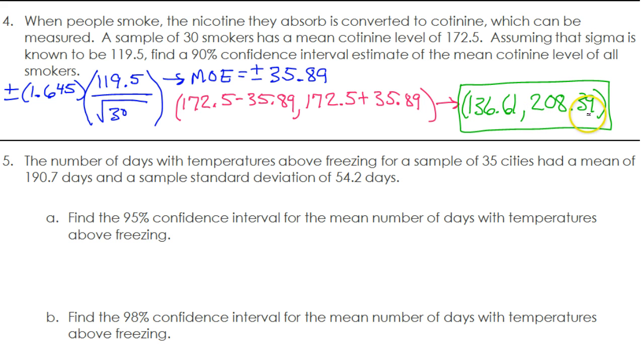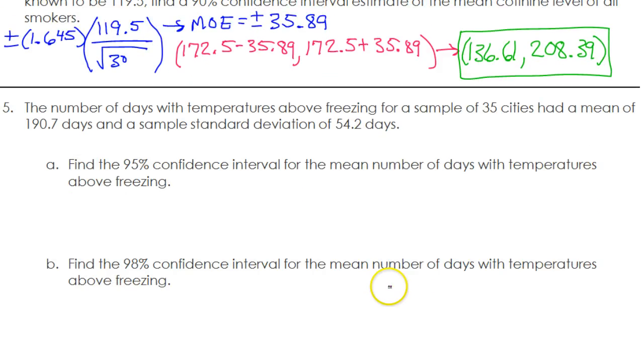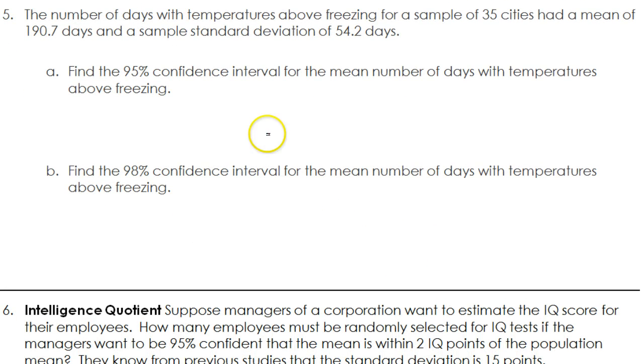So here is our 90% confidence interval. We can be 90% sure that the actual cotinine level of all smokers is somewhere within this interval. Let's move on and look at problem number five. The number of days with temperatures above freezing for a sample of 35 cities has a mean of 190.7 days and a sample standard deviation of 54.2 days.